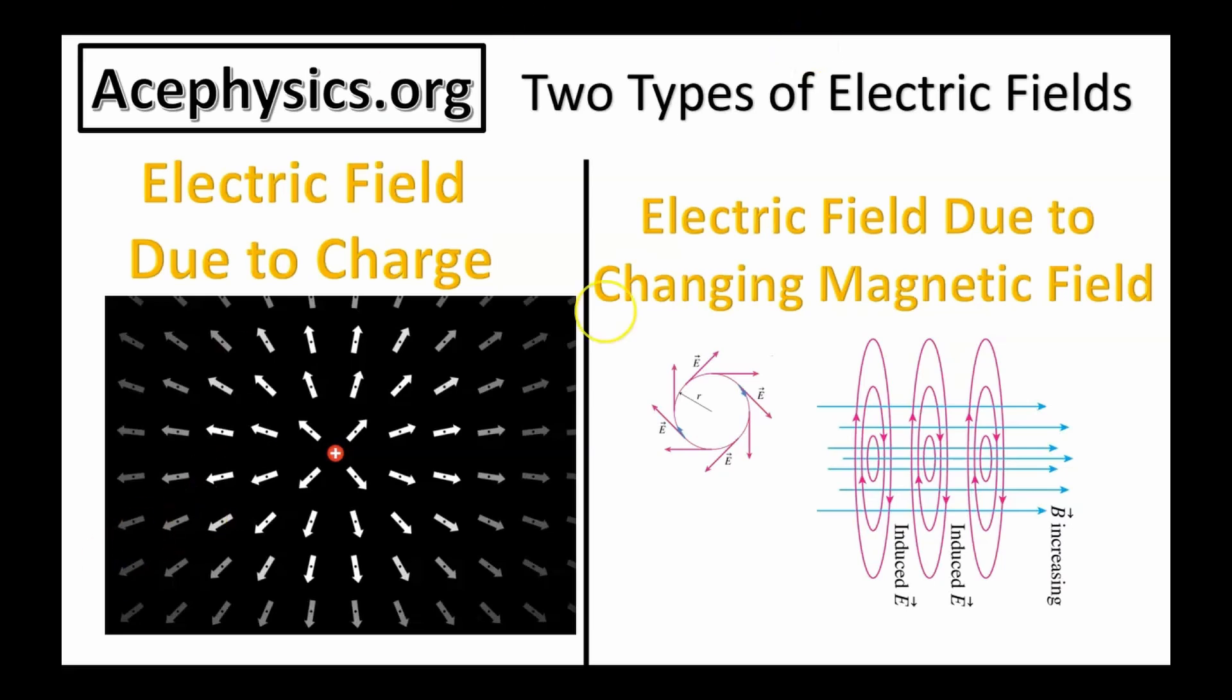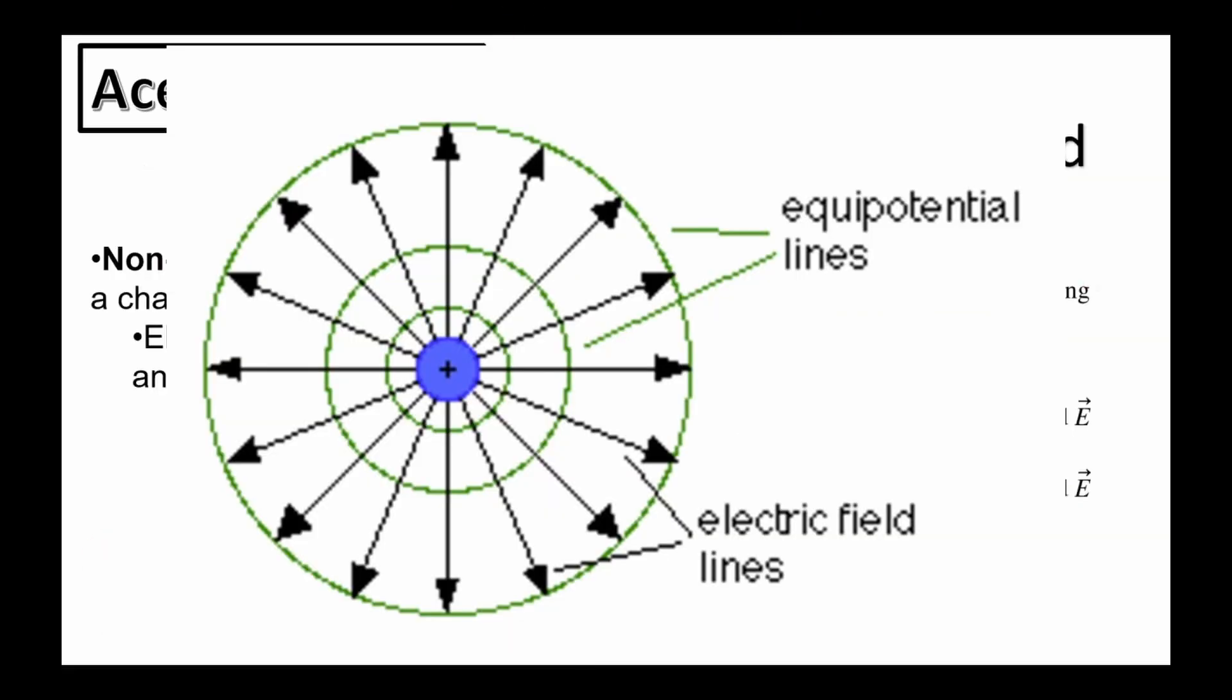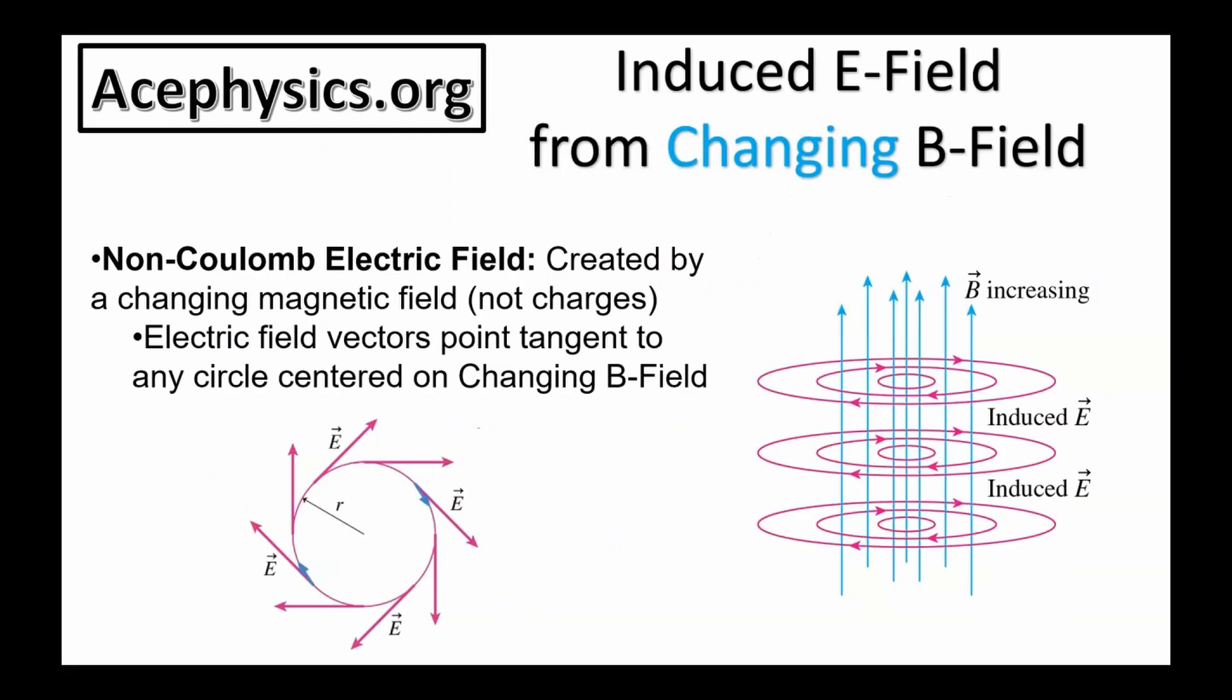There are two types of electric fields. That's so cool. One is created by charges, following Coulomb's Law, and the other comes from a changing magnetic field.